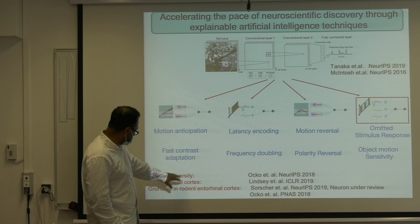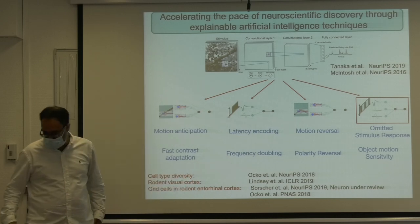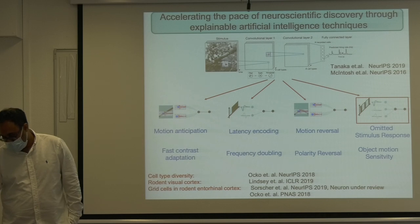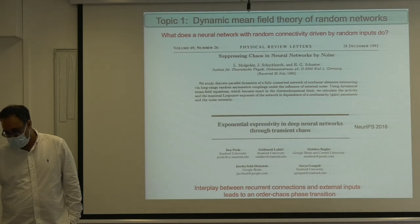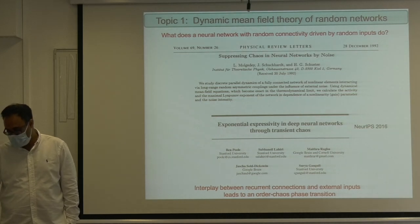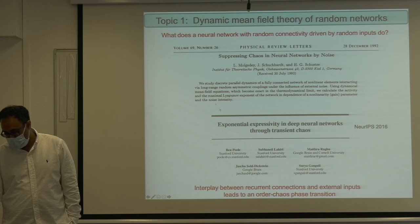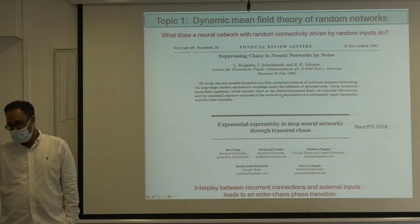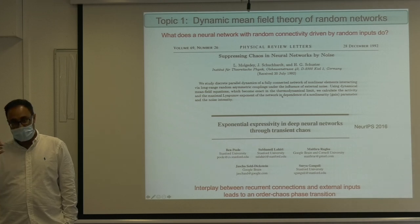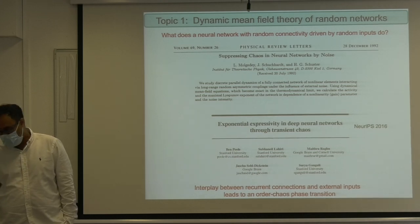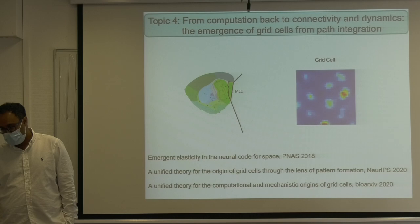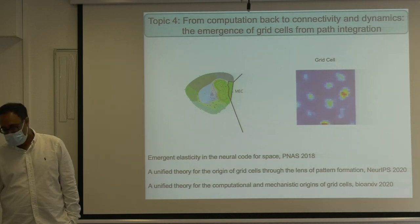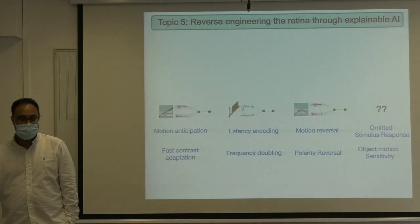We also extended this to the visual cortex, grid cells, and cell types. So basically we have these five topics, which will loosely be in one-to-one correspondence with the lectures. Today we're working on just a random neural network — random connectivity, random inputs, what does it do? Then we'll build in structure, do it in continuous time, and then analyze systems we didn't build by hand that we have to reverse-engineer for both navigation and vision. That's the game plan.